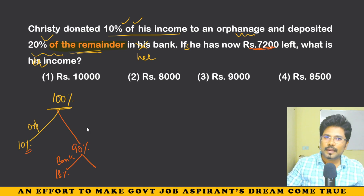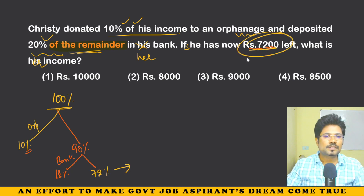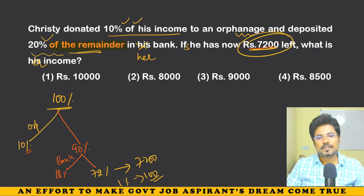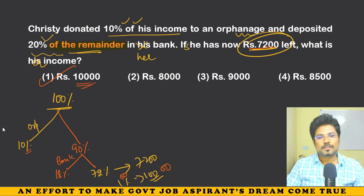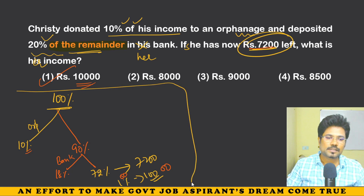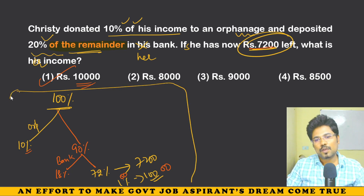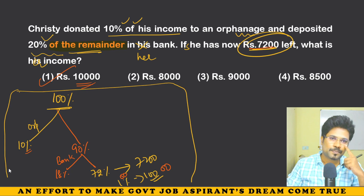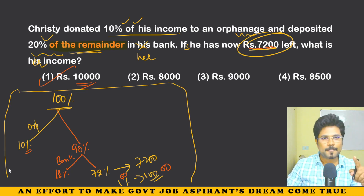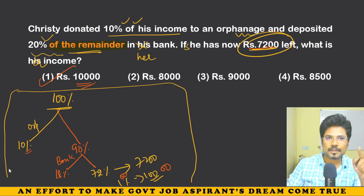After removing 18% for the bank from the remaining 90%, we have 72% left. This 72% is equal to 7200. So 1% equals 100, and 100% equals 10,000. Her income is 10,000. There are shortcuts using partial percentages — check the 2020-21 updated version for those methods.